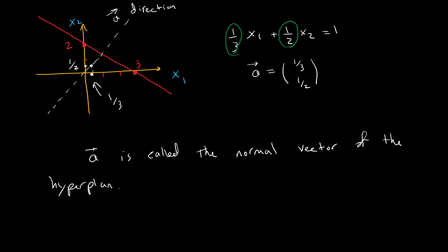If we factor out every coefficient, we get these two points. In this case, my a is [1/3, 1/2], provided that I have 1 on the right-hand side. If I draw this vector a—1/3 for x1 and 1/2 for x2—I have this little vector here, with direction from southwest to northeast.